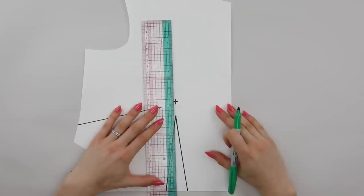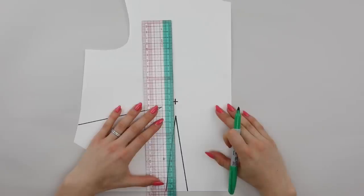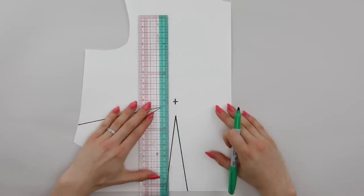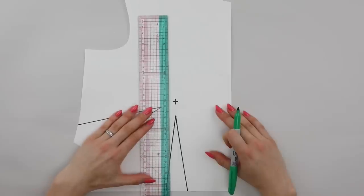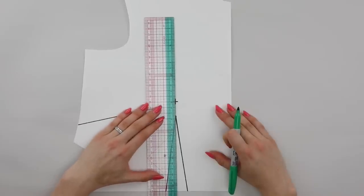Just like with the standard small bust adjustment, you're going to draw a line from the bust apex down to the waist. Most of the time this will be through the center of the waist dart.